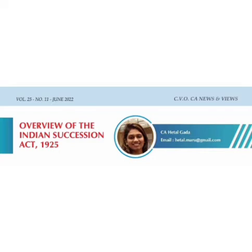Conclusion: The other provisions of ISA pertaining to testamentary succession, i.e., succession by way of will, shall be covered under the next article in detail, and accordingly are not covered here. As seen, every community has a different order of hierarchy to whom the properties shall succeed in case of intestate succession, and hence it becomes very important to determine the community to which the person belongs and know the applicable laws before commencing his or her estate planning. Disclaimer: The views and opinions expressed in the article are purely of the contributor. The readers are requested to take proper professional guidance before acting on the views expressed in the update.